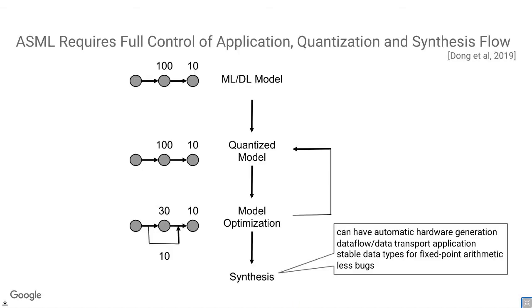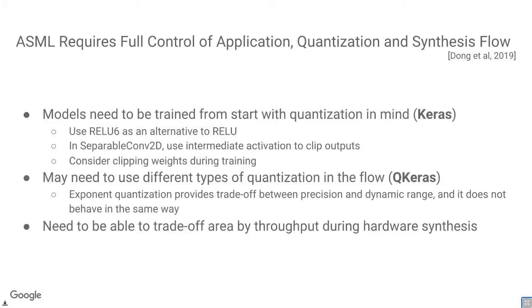So we want model optimization, model reduction, and finally synthesis — meaning efficient code generation or hardware generation. The flow we recommend has QKeras in mind. We tell people: don't use ReLU because it's unbounded. Since you're dealing with quantized arithmetic that has limits, use ReLU6 — which MobileNet also recommends. If you use separable convolution, you probably need an intermediate activation to clip outputs, so use the one from BioNet rather than the standard Keras separable convolution 2D. During training, apply constraints such as weight clipping.